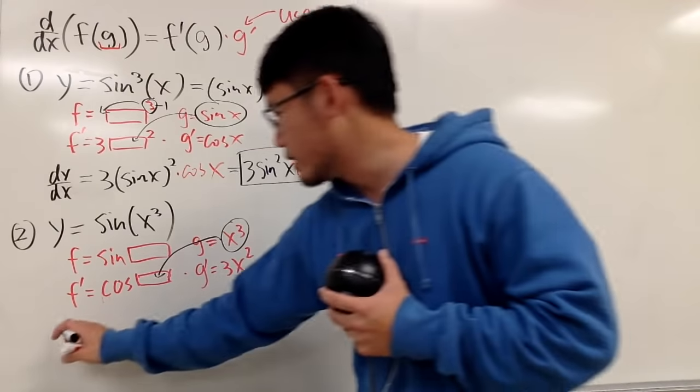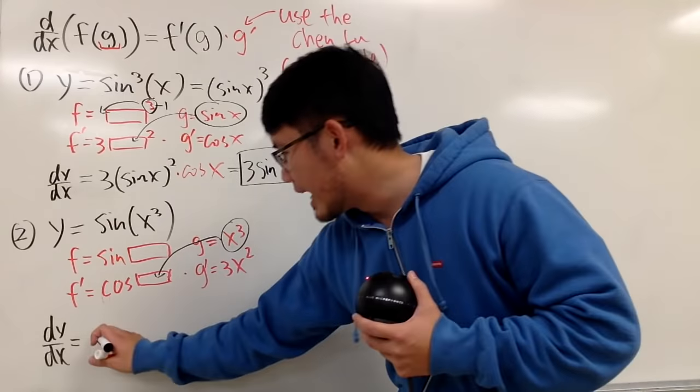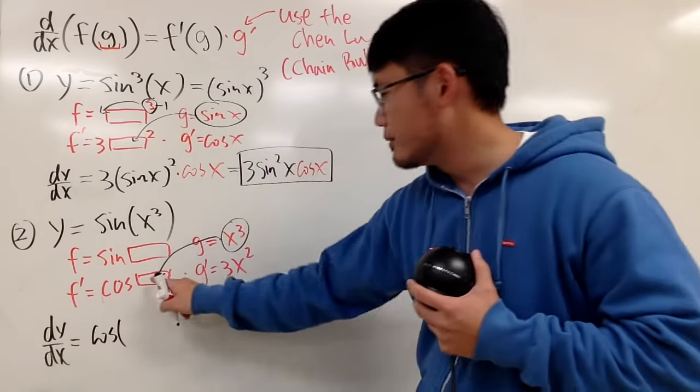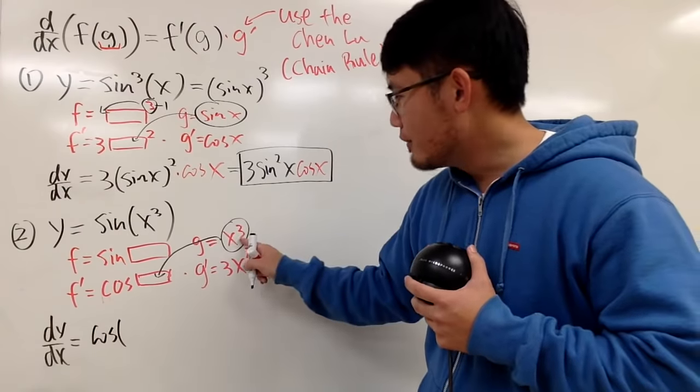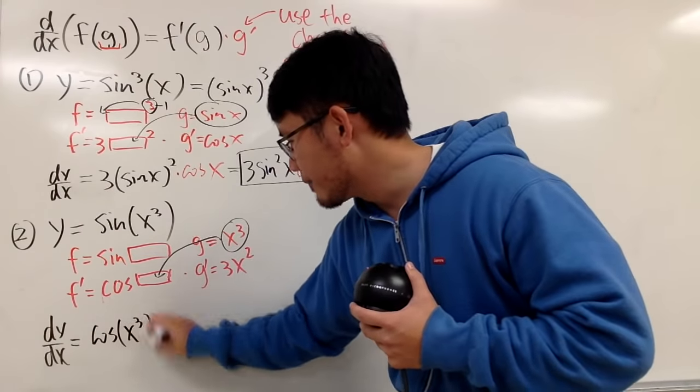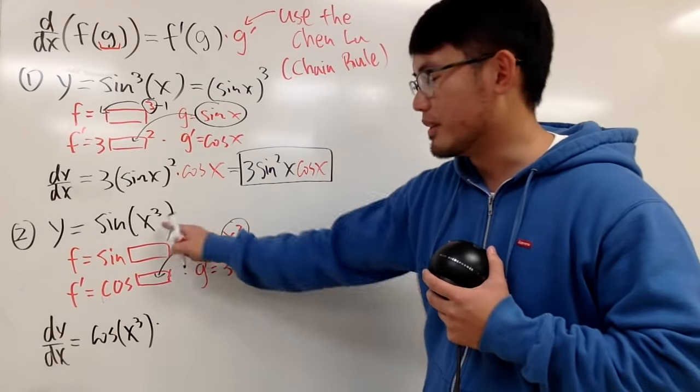And now, right here, let's write down the answer. dy/dx is equal to cosine of, once again, you don't use the box for the final answer, you just use two parentheses, of x to the third power, and then you multiply by 3x squared, which is the derivative inside.